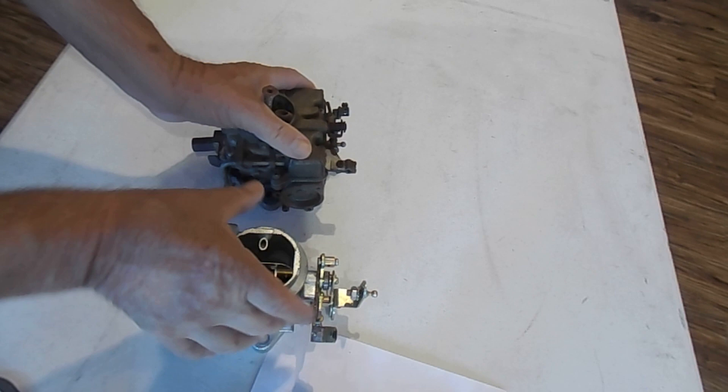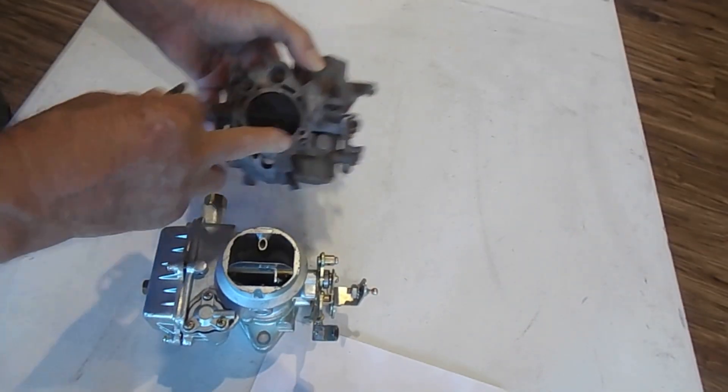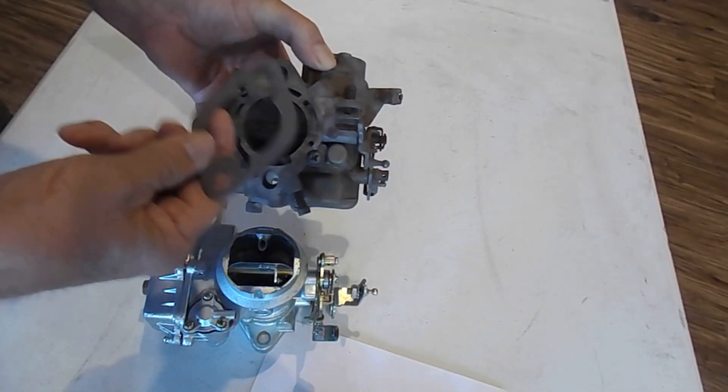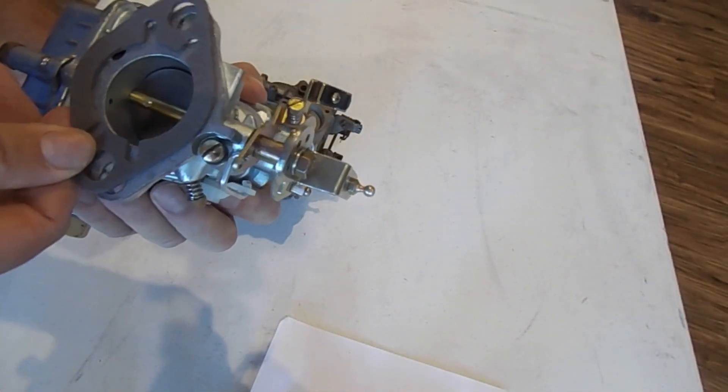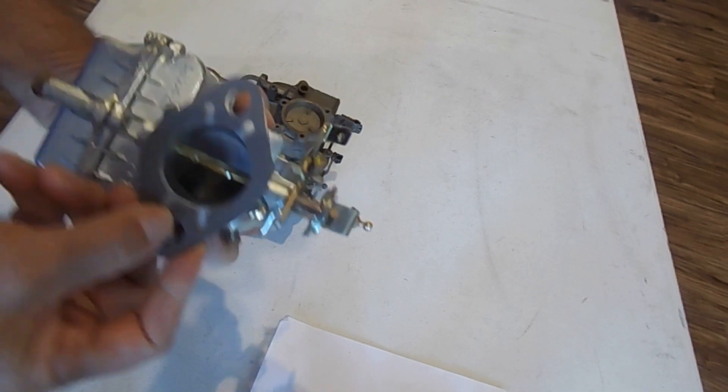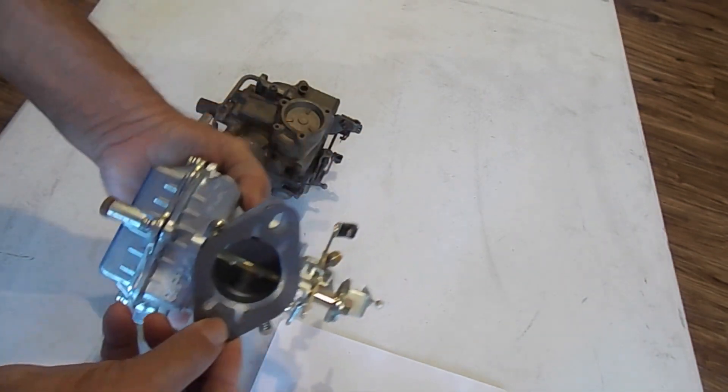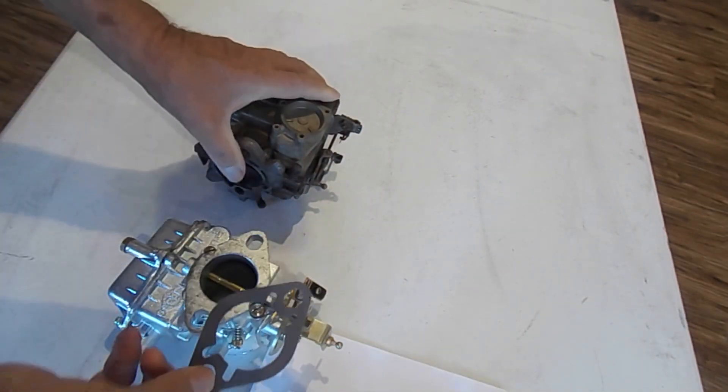It will bolt right on. Now you see a whole lot of vacuum passages on this 1940, and this 1904 does not have that. Use the gasket we supply with it, and that's all you need to do.